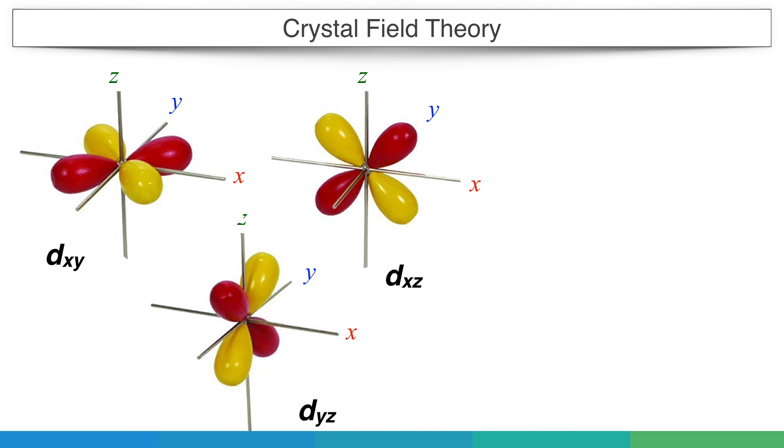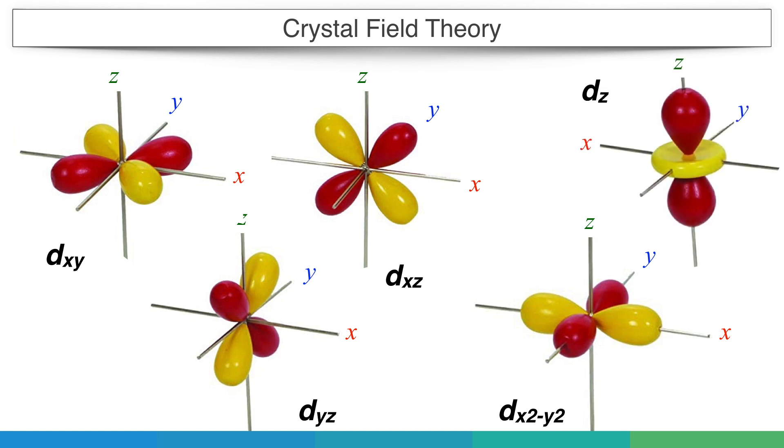This means in these three orbitals, none of the lobes is along the axis—all are between the axes. Now let's see dx²-y² lobes. They are oriented in the direction of x and y axes. Similarly, the lobes of dz² orbitals are aligned in the direction of the z axis. So these two orbital lobes are in the direction of axes.